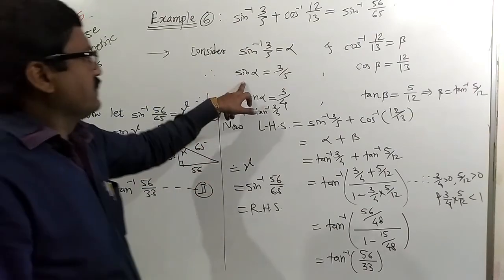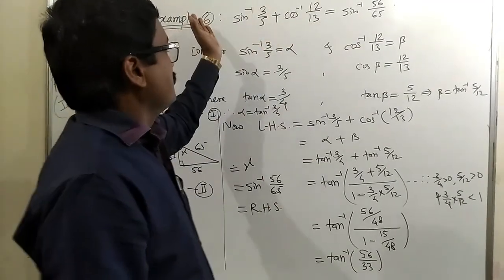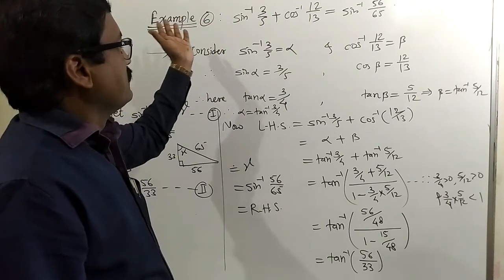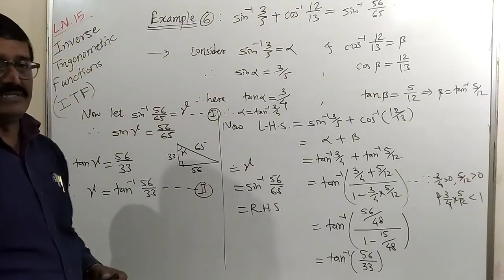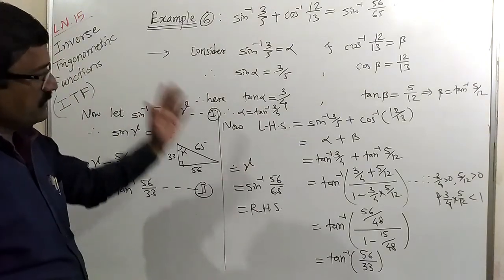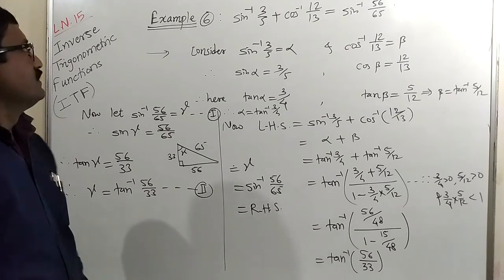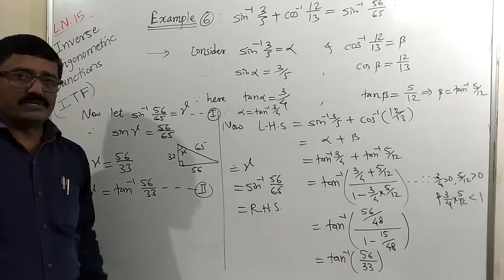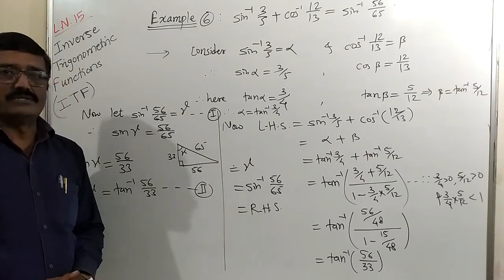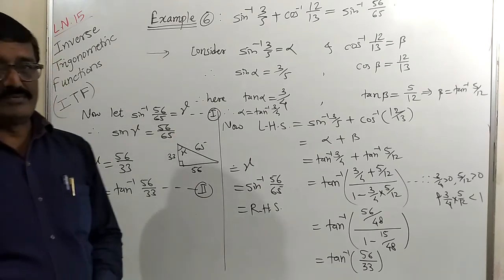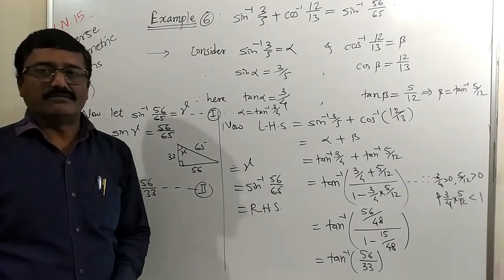Alternatively, from sinα and cosβ we can use the sine addition formula: sin(α+β) = sinα·cosβ + cosα·sinβ, then apply the inverse function. Using that approach also we can get the same result. So these are the six examples related to inverse trigonometric functions and their proofs. In the next lecture, we will solve more examples, including proofs and equations where we find unknown values.